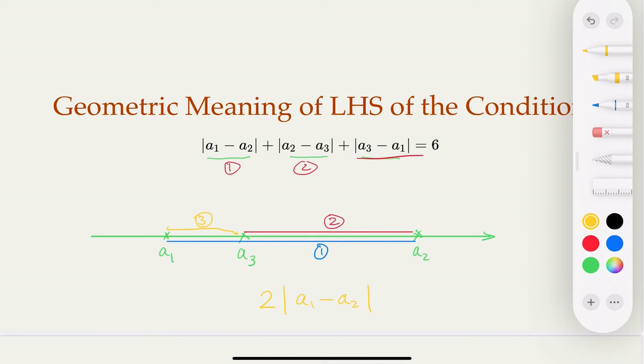Of course, the numbers could be in any arbitrary order. You may have another case where a3 is smallest, a1 is in the middle, and then a2 at the end. But no matter how you change the order, it's always the distance between the smallest and the biggest, and it's twice that. So which means in our case, we're saying the whole thing equals six, which means the distance between the smallest and the largest would be three.